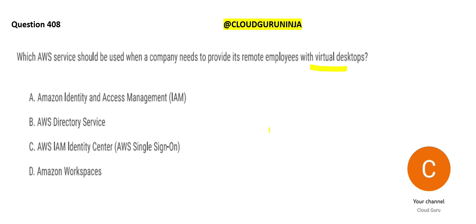Option C — Single Sign-On — is again a security and access solution. In your corporate world, you log into your corporate portal and clicking any link doesn't ask for a username and password — that happens through SSO. You put your username and password only once, and it cascades across different environments and websites. This question is not about user access, so these two options are wrong.